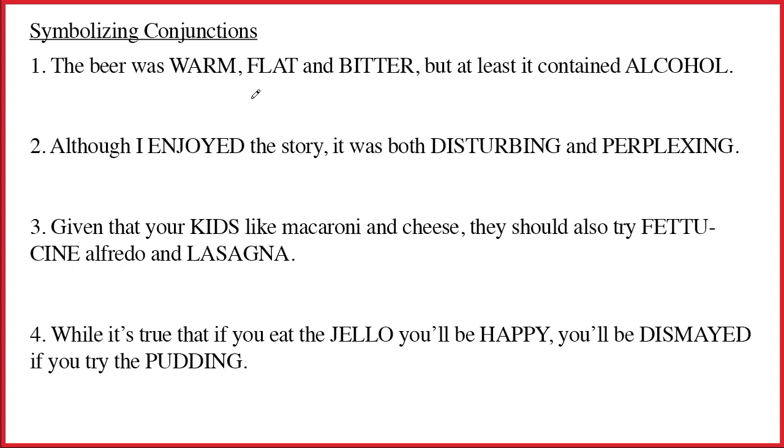The first sentence says, The beer was warm, flat, and bitter, but at least it contained alcohol. This is a very simple sentence which is just a string of sentences combined with ampersands. The beer was warm and the beer was flat, and the beer was bitter.